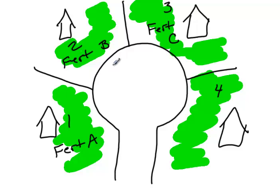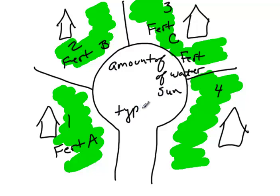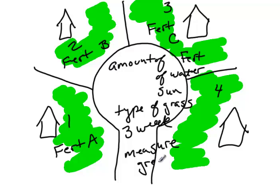Everything else they decide to keep the same. So they use the same amount of fertilizer, and they use the same amount of water. Obviously since they're all in the same cul-de-sac, they get the same amount of sun. They have the same type of grass. All these things they're going to keep the same. And they decide to wait three weeks and then measure how green their grass is. Okay, so that's what they decide to measure.